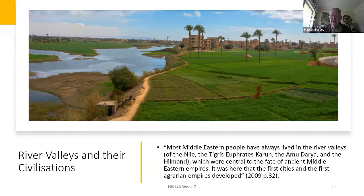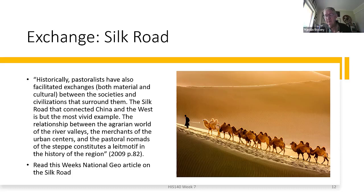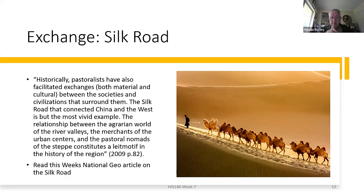Bourke talks about the Silk Road and the role of pastoralists. Pastoralists weren't just losers out in the desert — they actually played a major role. The Mongols were pastoralists in their day as well. Historically, pastoralists have facilitated exchanges between societies and civilizations around them. The Silk Road — which is also the National Geo reading this week — connecting China and the West is the most vivid example. The relationships between the agrarian world of the river valleys, the merchants of urban centres, and the pastoral nomads of the steppes all constitute a leitmotiv — a recurring theme — in the history of this region.